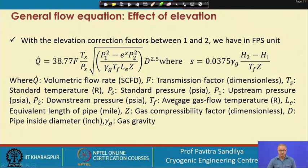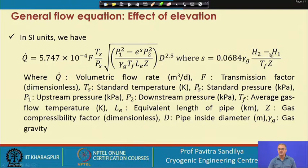The parameter S is expressed differently depending on the unit system. In FPS units, the outlet pressure has a modification due to elevation, and this modification becomes unity when there is no elevation effect. H2 and H1 are the elevations at the inlet and outlet respectively. A similar expression for S is given for SI units, where both the constant for Q and the constant for S change.